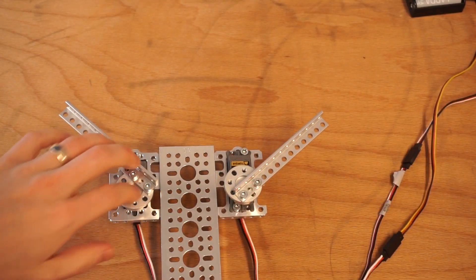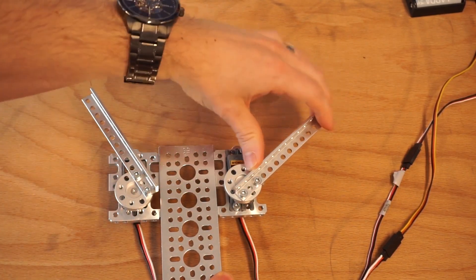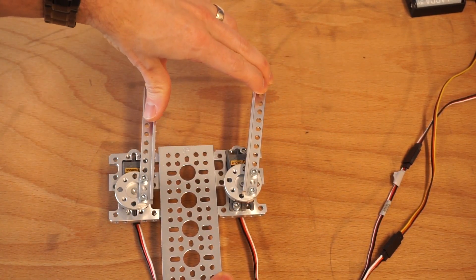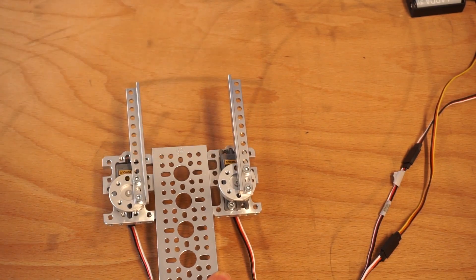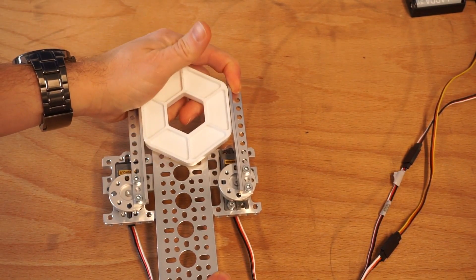In this claw I've got two servos. One is spinning one direction, the other spins the other direction. And when they spin together, they should clamp onto a single joint like so.